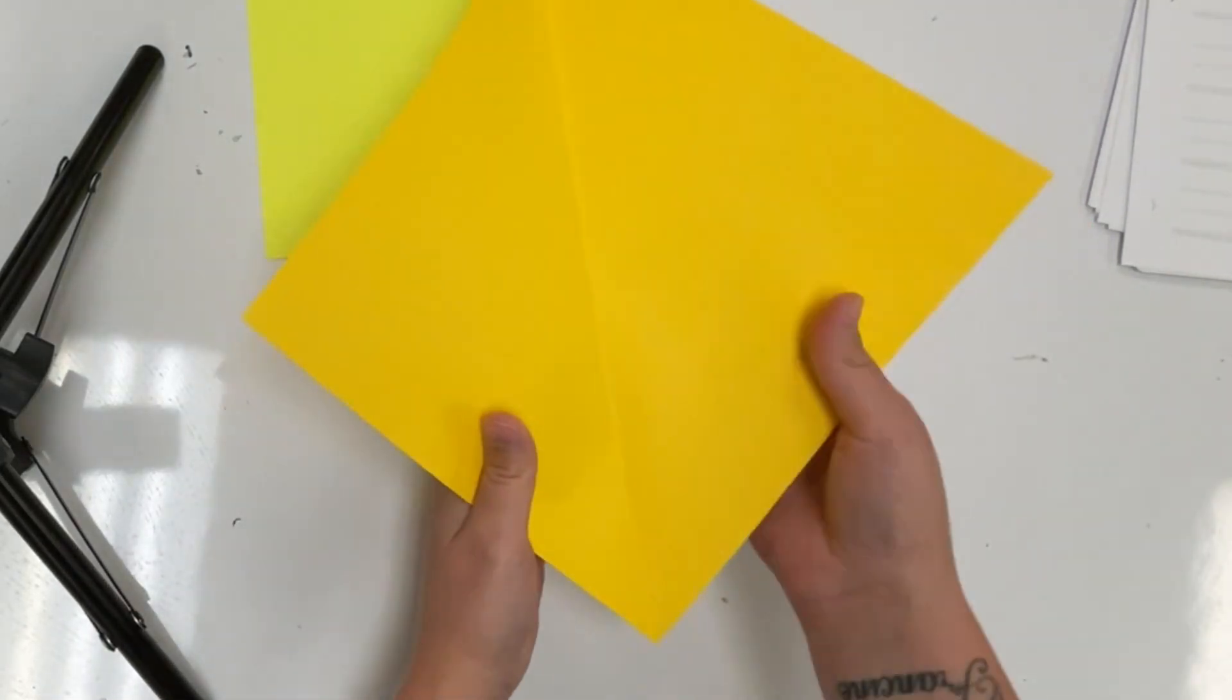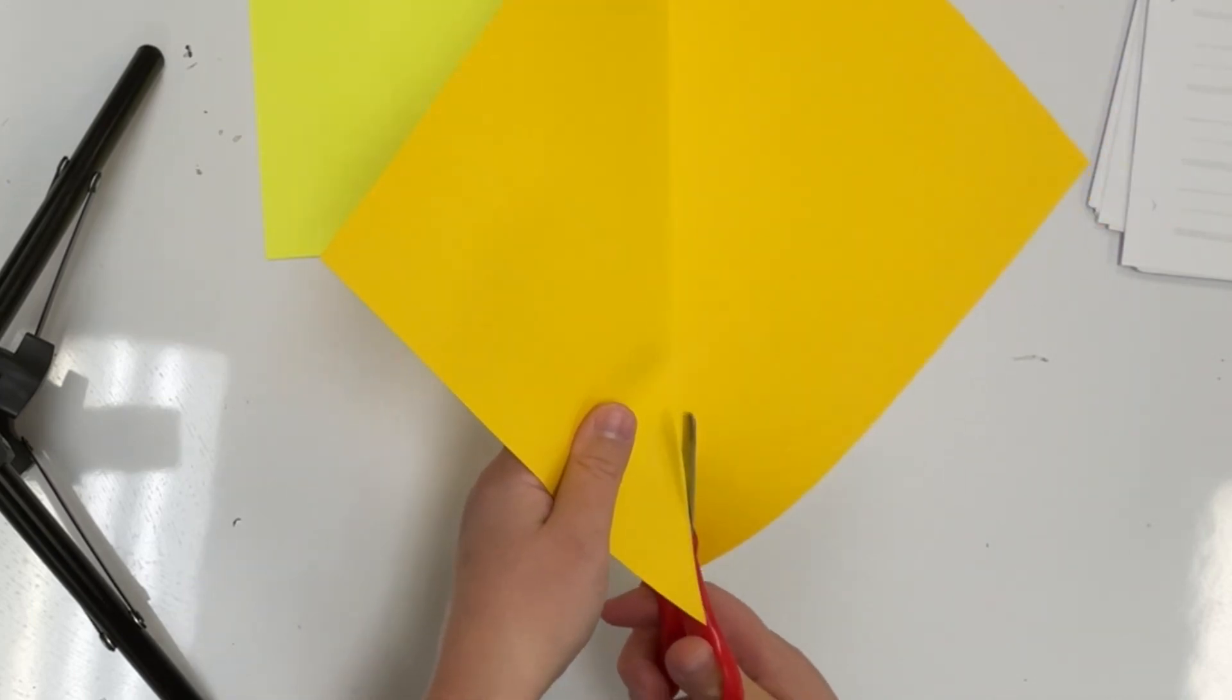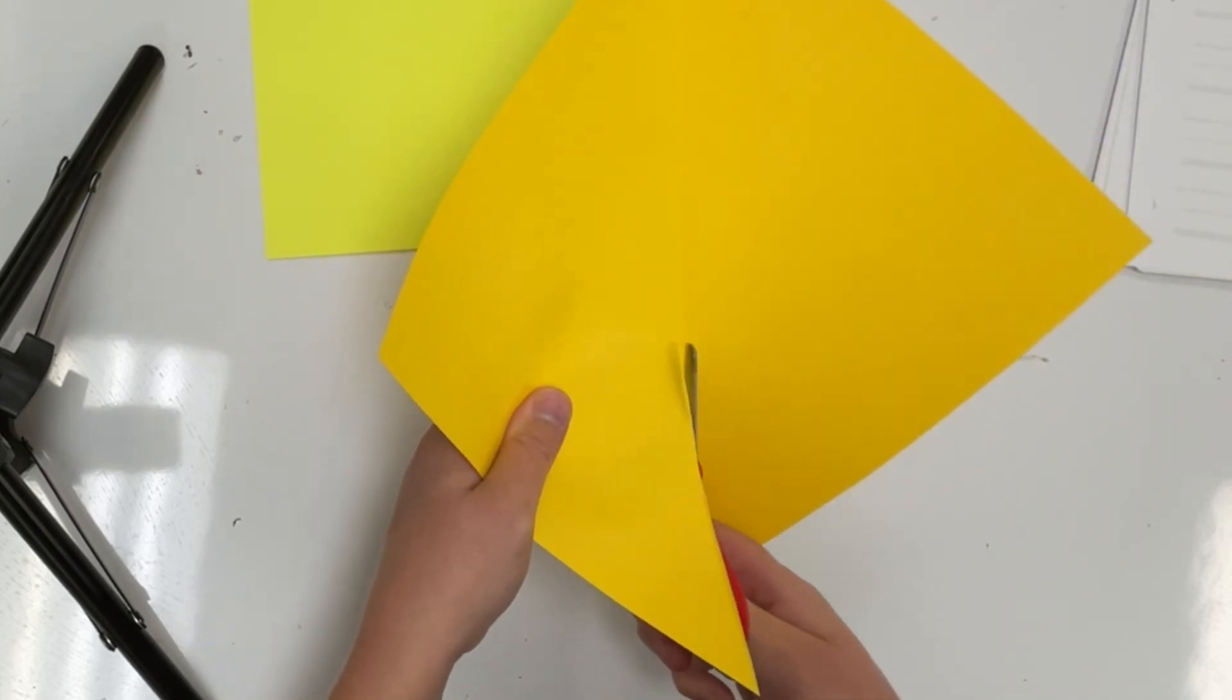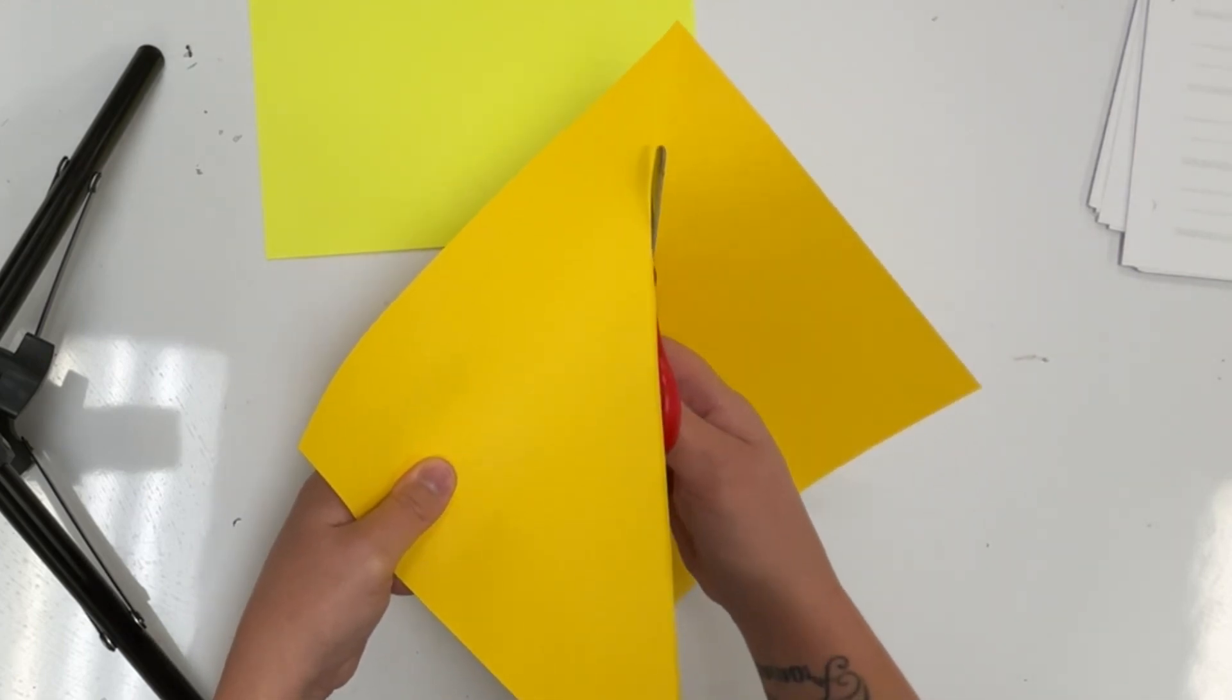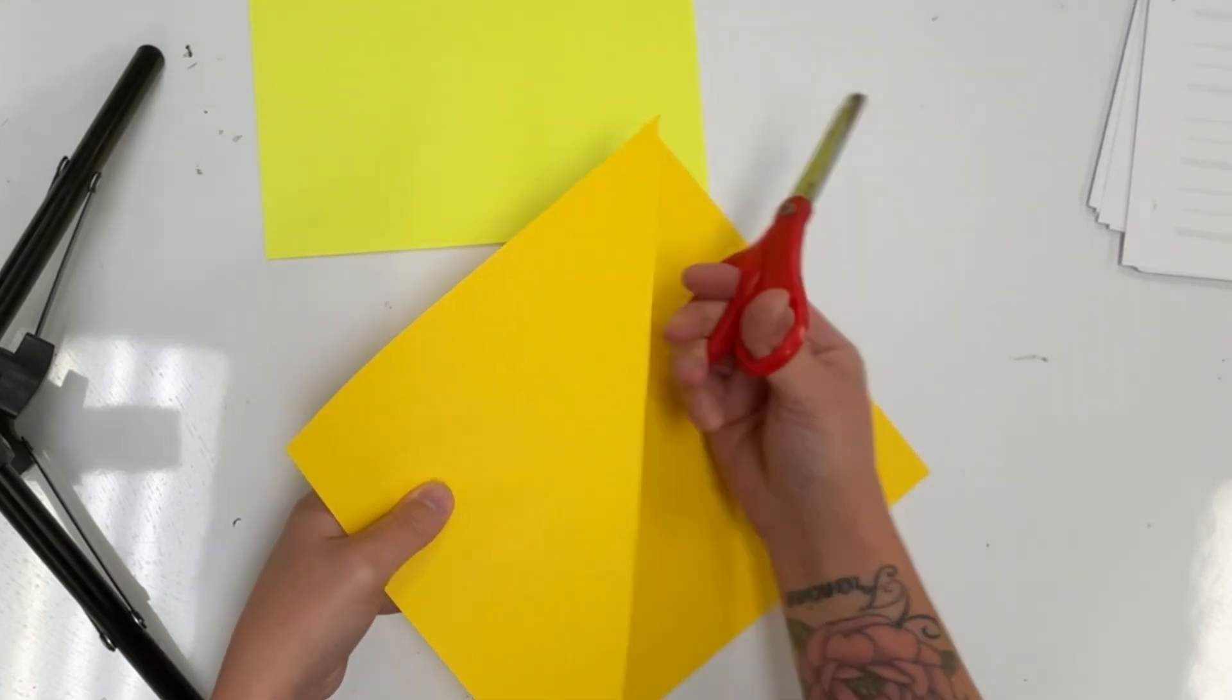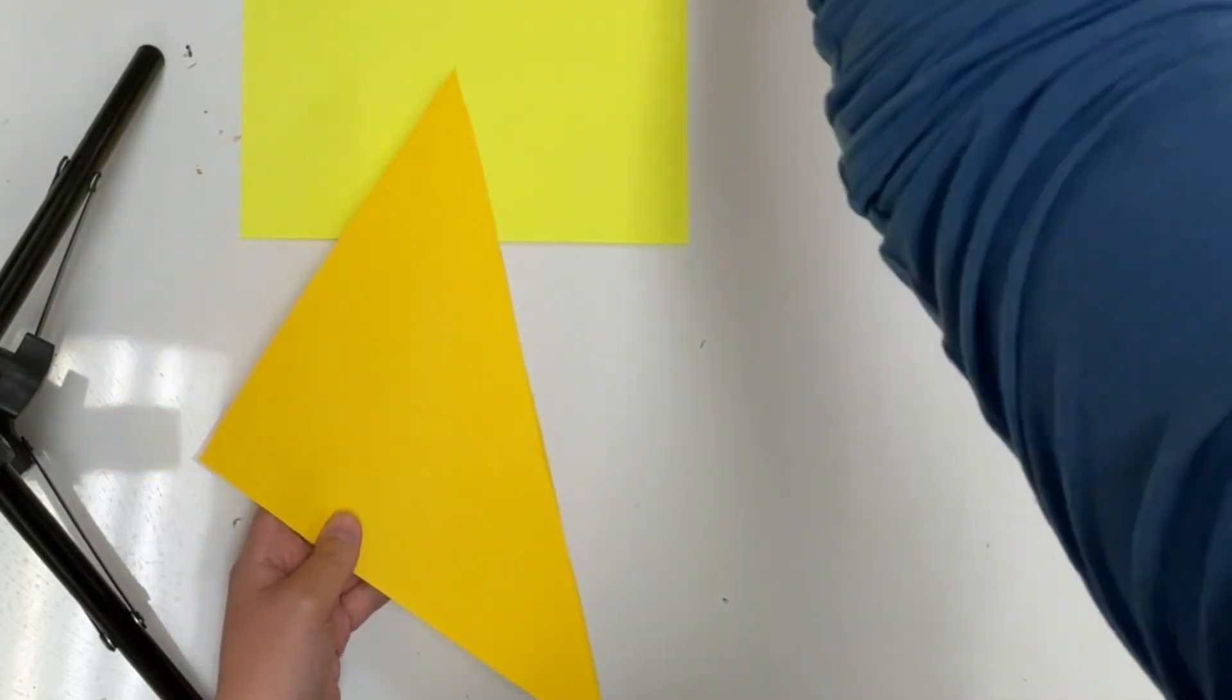Then I'll unfold it and cut right on that line to make two equal triangles. I'm going to set one triangle aside to use for a future art project, and I'm going to keep one triangle to glue to my bigger piece of paper.